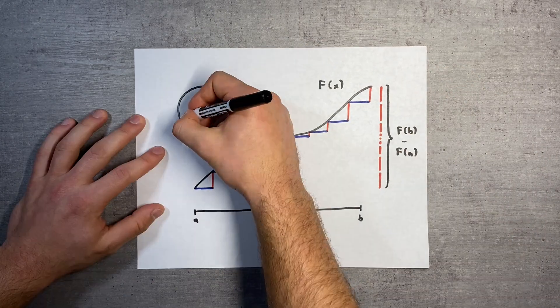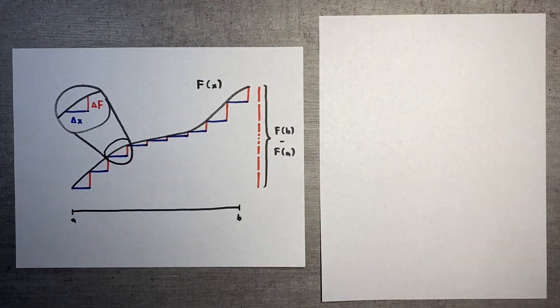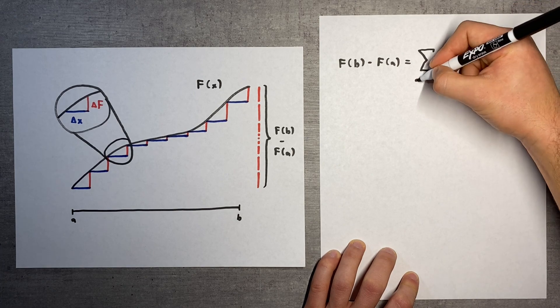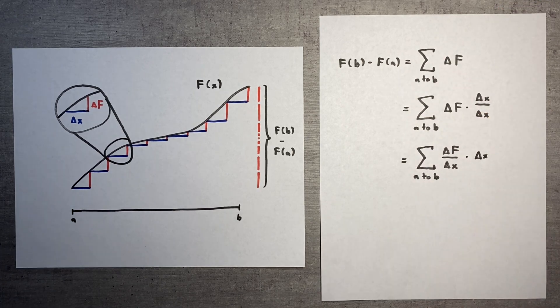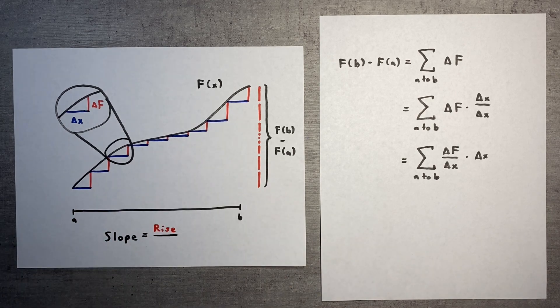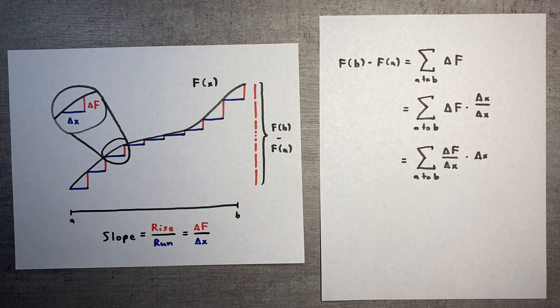We denote the changes in F as delta F and the width of the pieces as delta x. Writing out this equivalence, we can multiply delta F by delta x over delta x, but delta F over delta x is the average slope of F over one of the small pieces. If we take the limit as delta x approaches zero, this becomes the derivative of F.